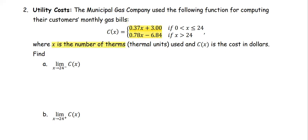where x is the number of therms or thermal units used, and C(x) is the cost in dollars.